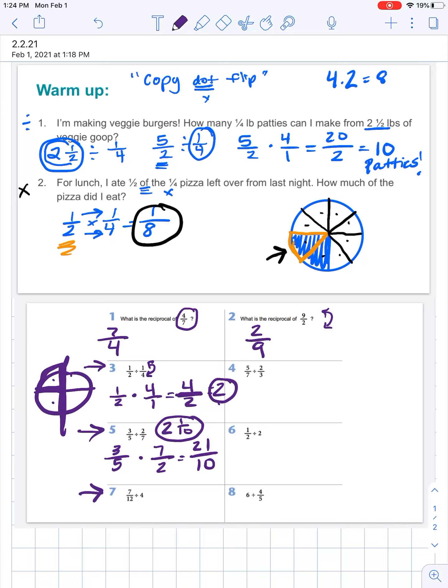And then our last one here, seven twelfths divided by four. Let's go ahead and make this a fraction, four over one. And now we can copy dot flip, seven twelfths times one over four. We've got seven, if we multiplied straight across, and forty eight. Seven forty eighths. Awesome. Don't forget to check out the answer key video for your next problem set.